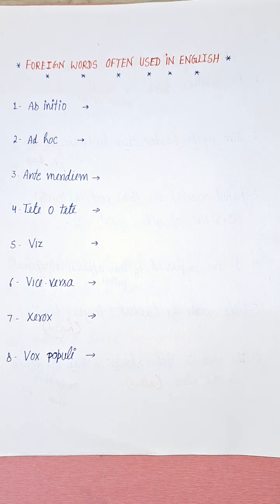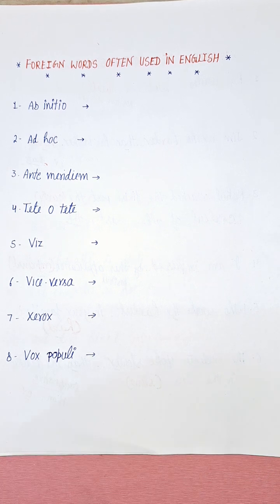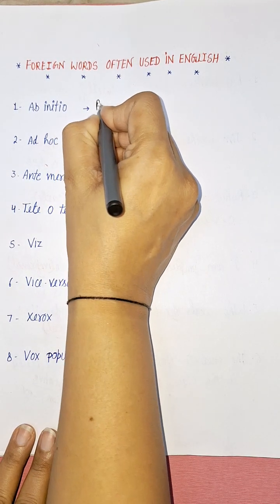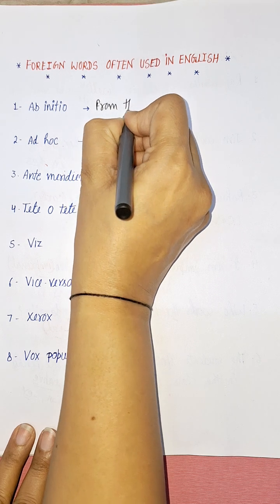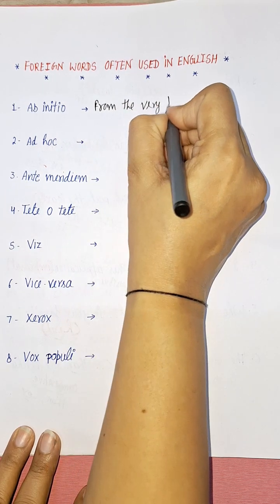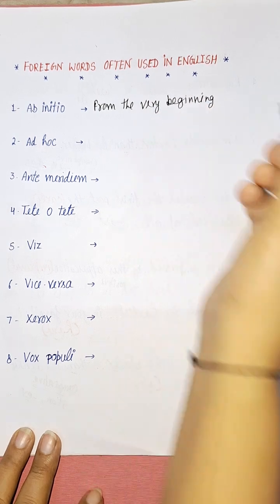Let's take the first word — ab initio. What does it mean? Ab initio means from the very beginning. I'm writing here the meaning of ab initio: from the very beginning.